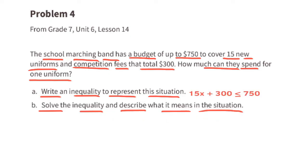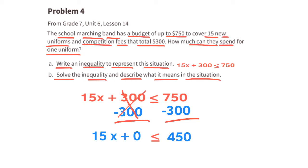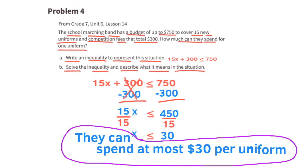Part B: Solve the inequality and describe what it means in the situation. To get x by itself, subtract 300 from both sides of the inequality, leaving 15x is less than or equal to $450. Now divide both sides by 15, giving x is less than or equal to $30. This means they can spend at most $30 per uniform.